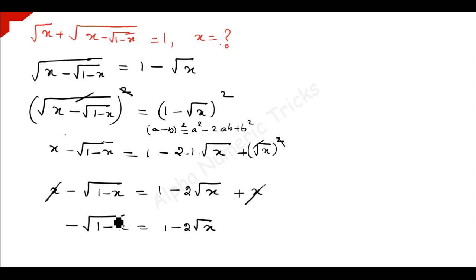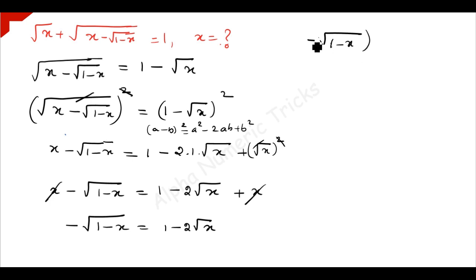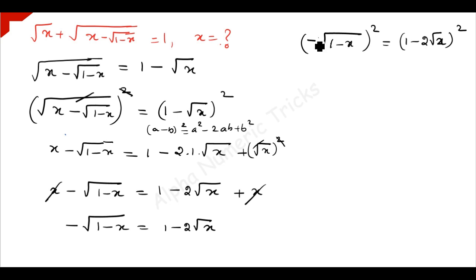Again, to eliminate this square root we square both sides. So squaring on both sides: minus square root of 1 minus x, the whole square, is equal to 1 minus 2 times square root of x, the whole square. The negative becomes positive because of the square, and the square root and square get cancelled.